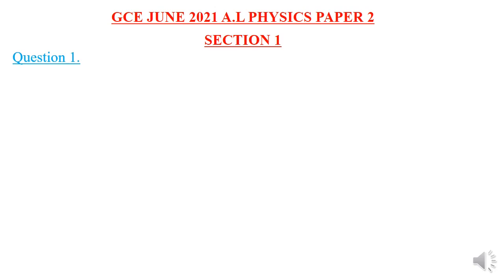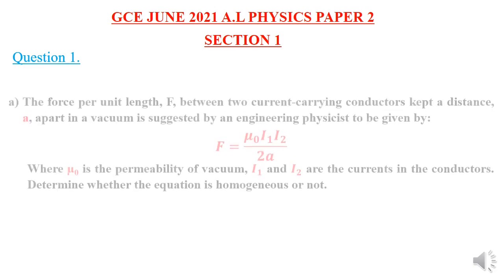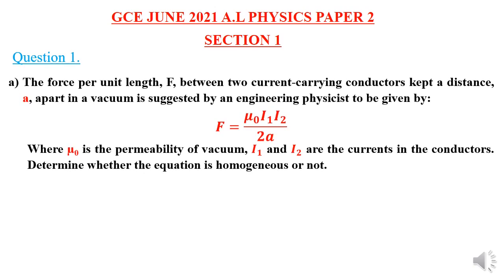Question 1 was divided into two parts, A and B. Part A reads: the force per unit length F between two current-carrying conductors kept a distance A apart in a vacuum is suggested by an engineering physicist to be given by F equals μ₀I₁I₂ all over 2A, where μ₀ is the permeability of vacuum and I₁ and I₂ are the currents in the conductors. Determine whether the equation is homogeneous or not.